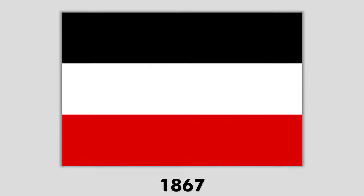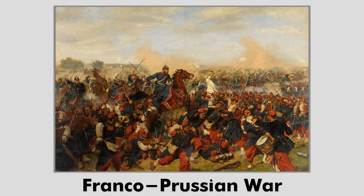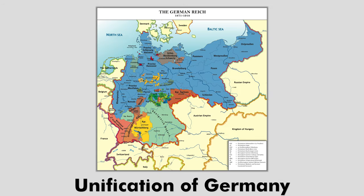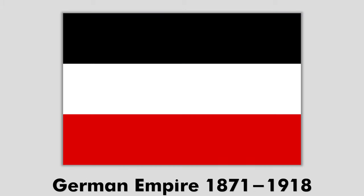This flag would also be the national flag for the subsequent German Empire, from 1871 to 1918, which finally replaced the German Confederation. In the Franco-Prussian War of 1870, the remaining southern German states allied with the North German Confederation. This led to the unification of Germany. A new constitution of 1871 gave the federal state the new name of German Empire and the Prussian king the title of Emperor. The black-white-red tricolor remained the flag of Germany until the end of the German Empire in 1918.